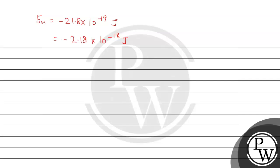For n = 3, En will be equal to -21.8 × 10^-19 × Z²/n². For hydrogen atom, Z = 1, and n = 3.